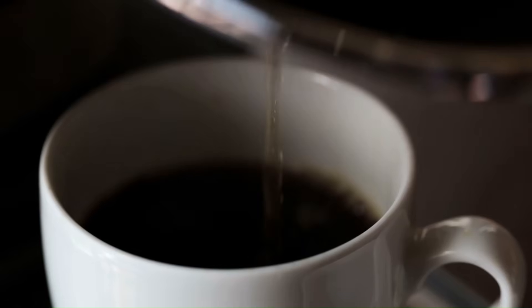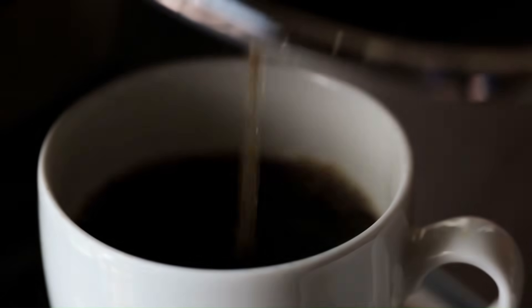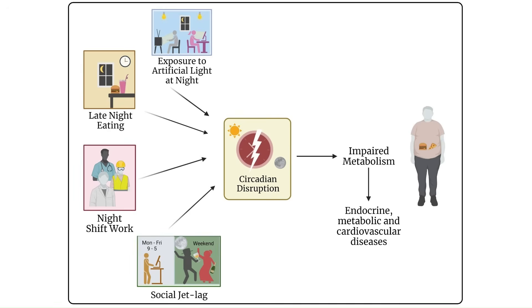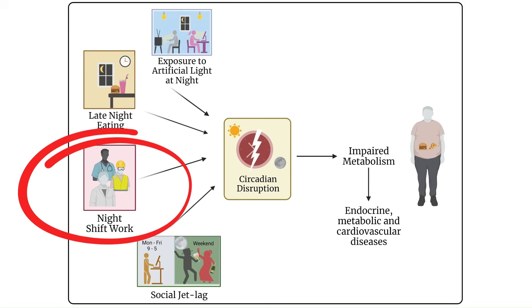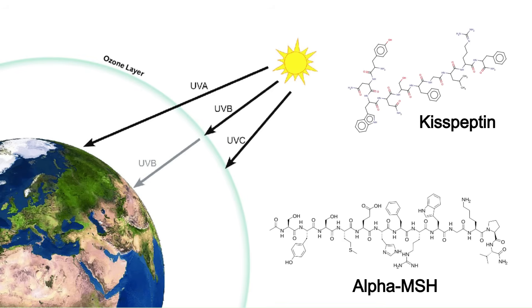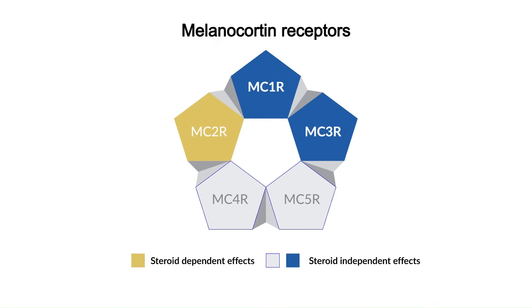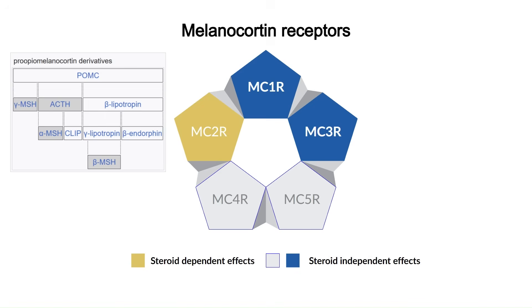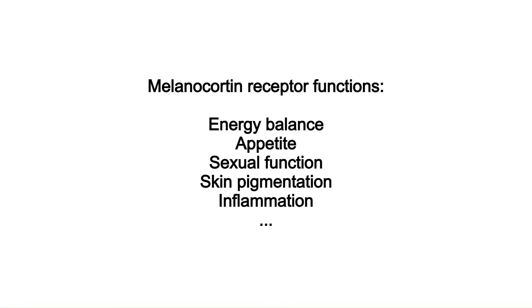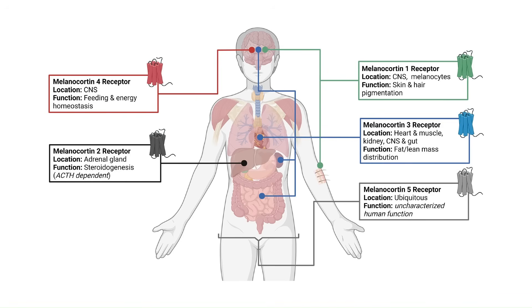Don't drink caffeine after midday, avoid alcohol, and if you can, avoid big disruptions to your sleep schedule like shift work or jet lag. Getting UVB light on your skin and in your eyes can also influence kisspeptin through alpha-MSH — alpha melanocyte stimulating hormone. This is part of the melanocortin system, a fascinating set of peptides and receptors involved in energy balance, appetite, sexual function, skin pigmentation, and inflammation.